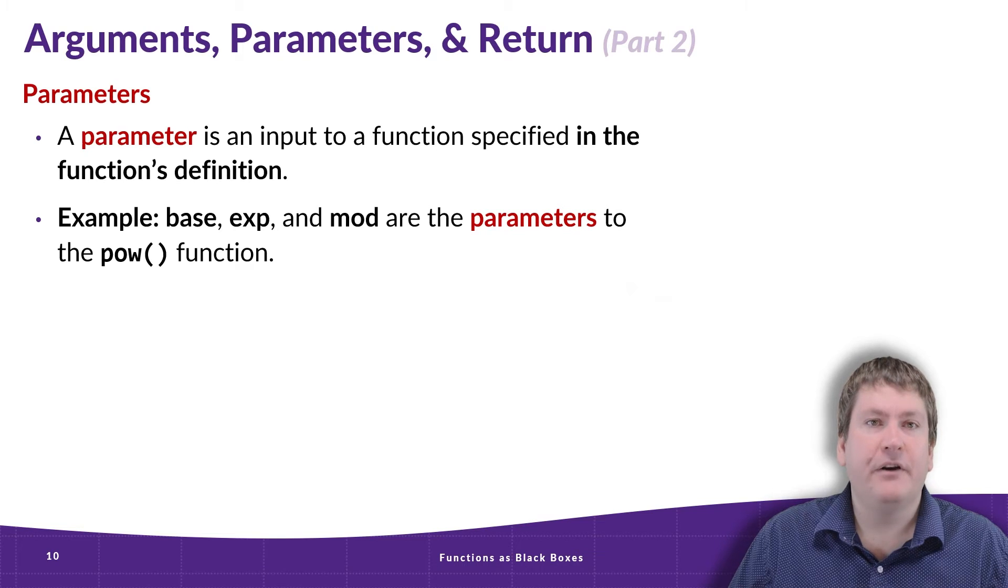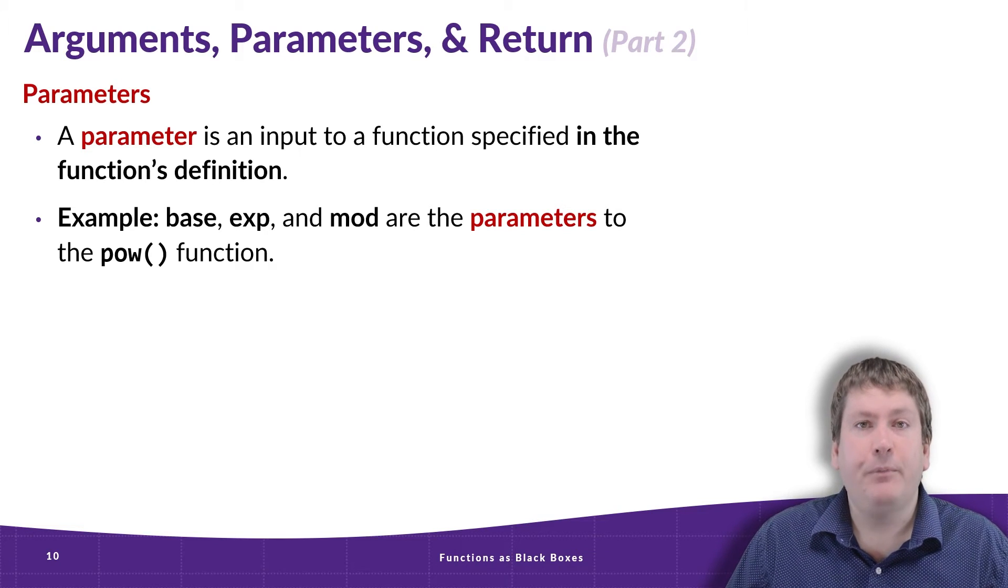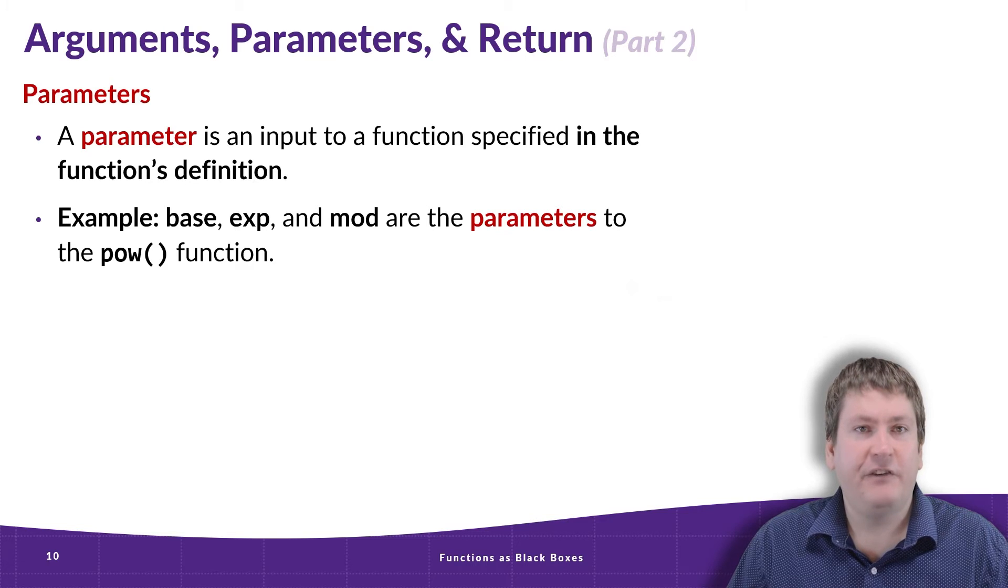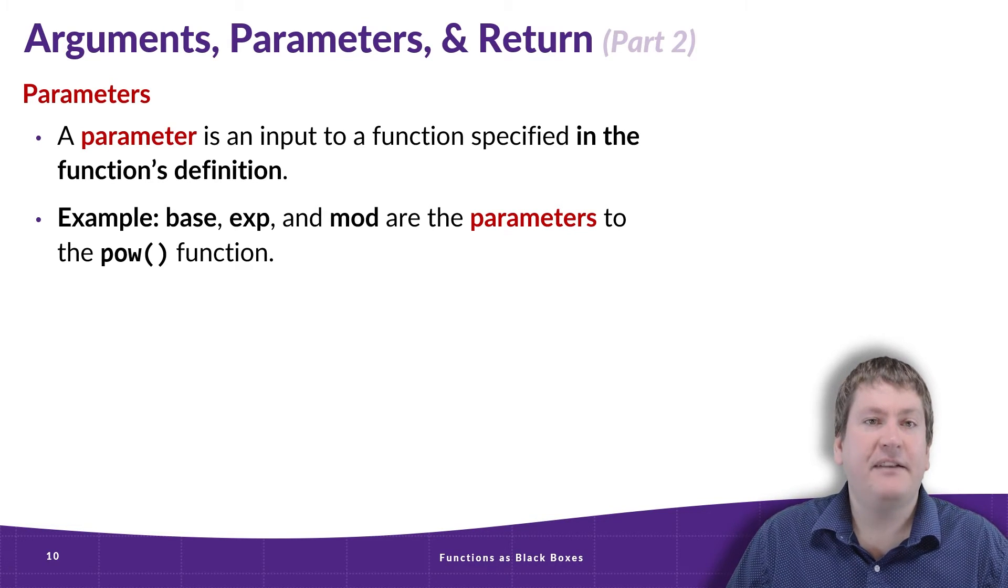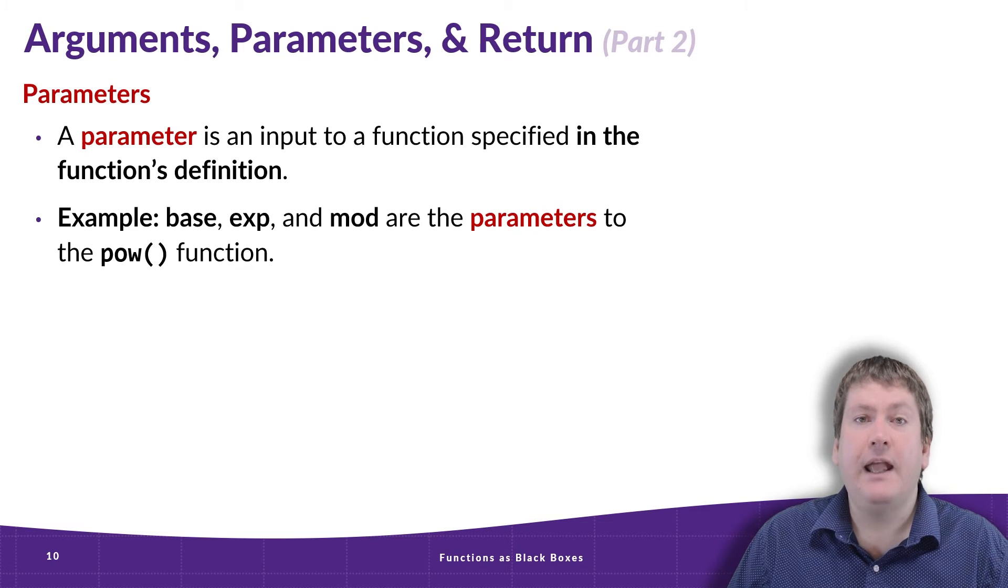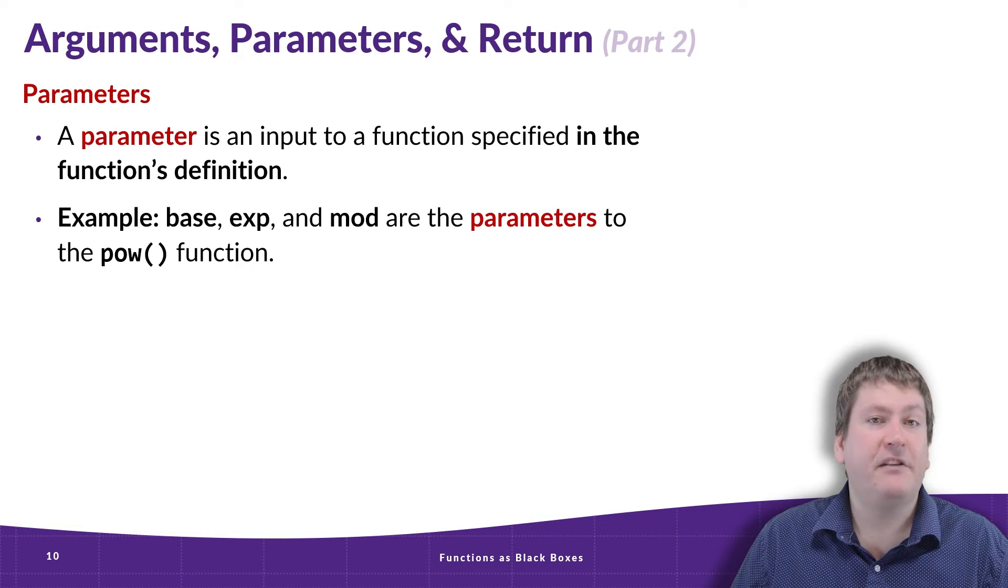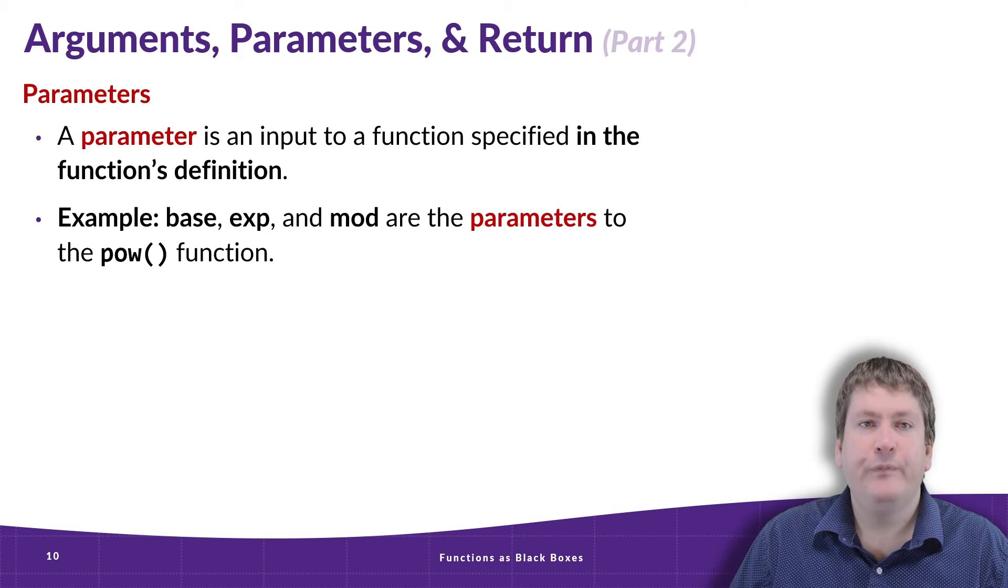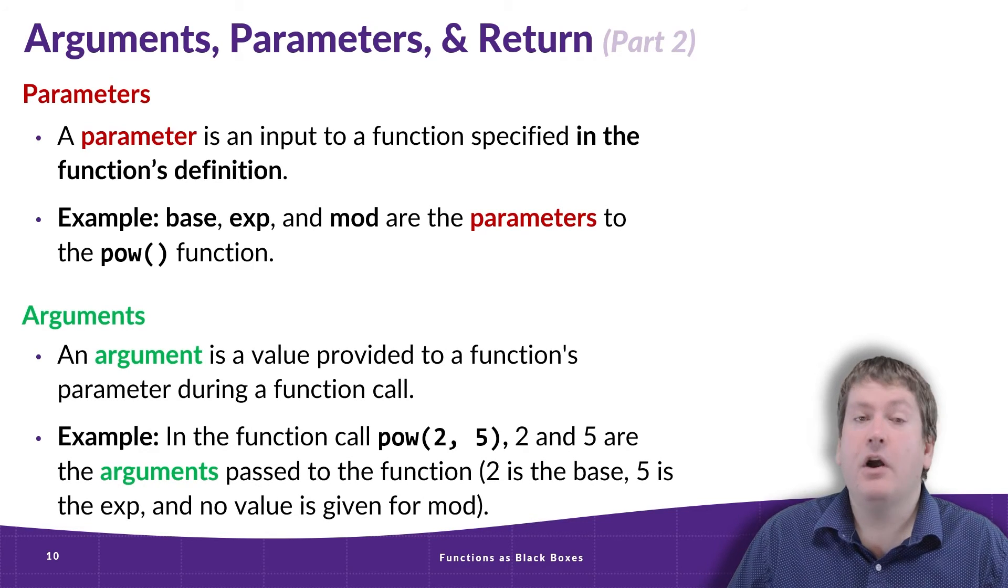So there's an important concept here, and that is parameters. Parameters are the input to a function, and these are always specified in the function's definition. And as we saw in that last example, pow has three parameters: base, exp, and mod. So we would say base, exp, and mod are all parameters to the pow function.